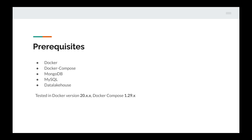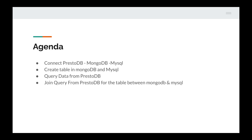Everything is shared using version 20.x and Docker Compose 1.29.x. Today we are going to cover these topics — this is our agenda. Initially we will integrate PrestoDB, MongoDB and MySQL. Then we create tables in both MongoDB and MySQL. Then we query data from MongoDB and MySQL, and most importantly we are going to create a JOIN query to join the databases between MySQL and MongoDB, which will be executed from PrestoDB.